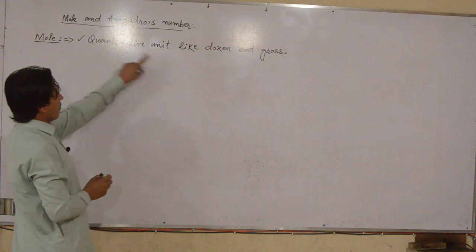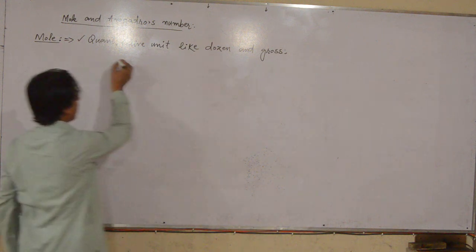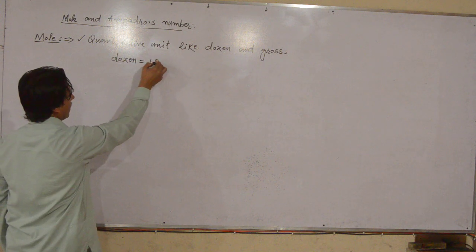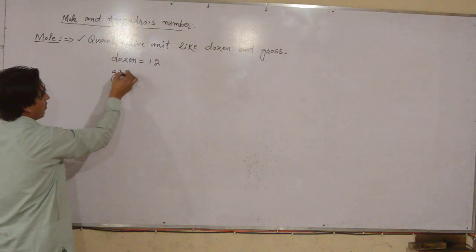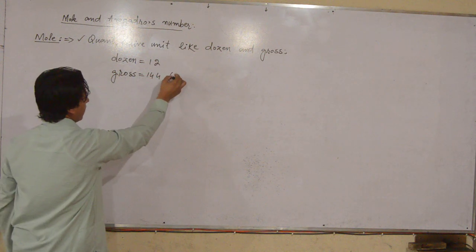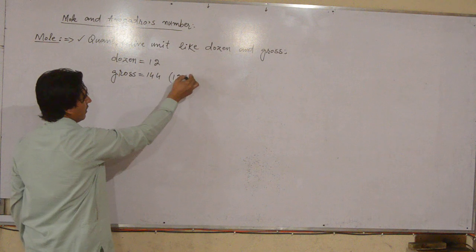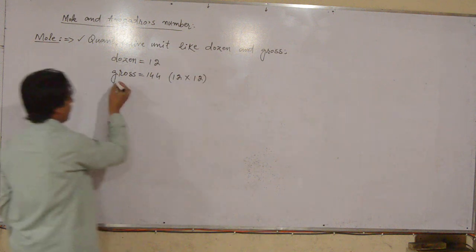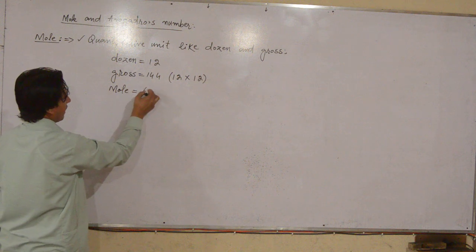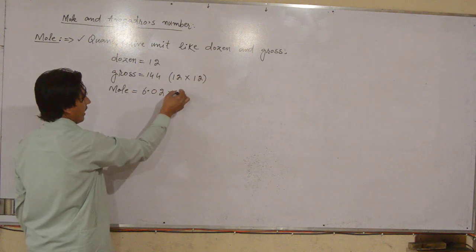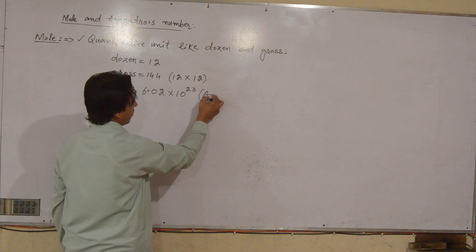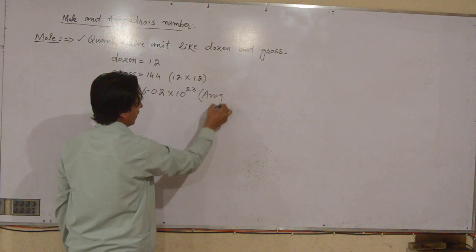Dozen is a small number — dozen represents 12. Gross represents 144, which is 12 dozen. The mole represents a very large number: 6.02 × 10 to the power 23. This number is called Avogadro's number.